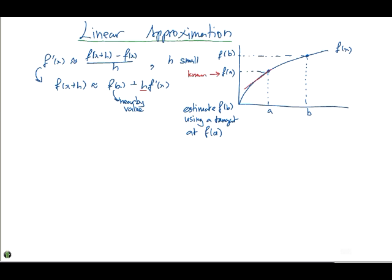You can estimate f(b) using a tangent at f(a). Essentially, that's what you're doing. So you draw your tangent like so, and you say, okay, well according to my calculations, f(b) is just going to be the equation of the tangent evaluated at b. So this here lines up, and you come all the way across. And this value here, that's your estimated f(b).